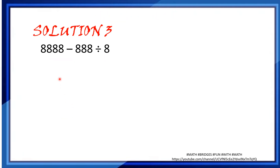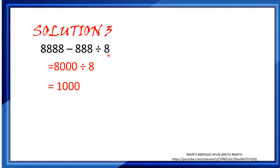The next way of getting the answer is: (8888 − 888) ÷ 8. When we subtract, it's 8000 ÷ 8, which equals 1000. You can check how many times we are repeating the digit 8 — that's 8 times, satisfying the condition. Each person will have a different way of thinking, so we may get the solutions in different ways.